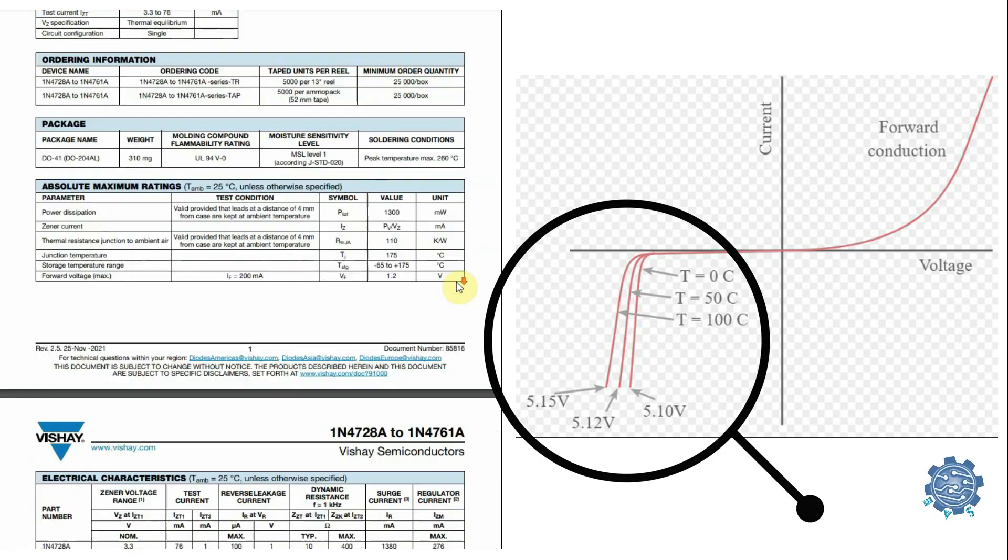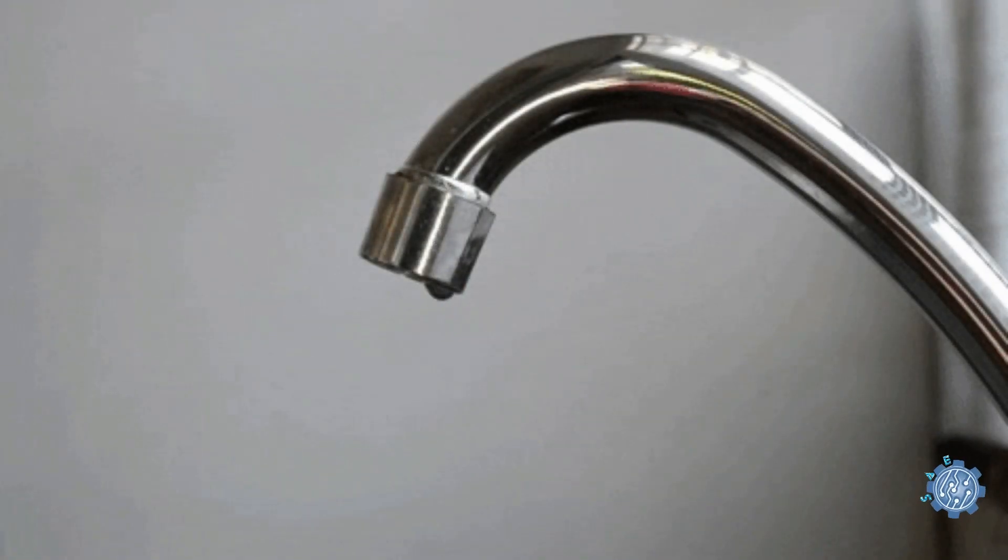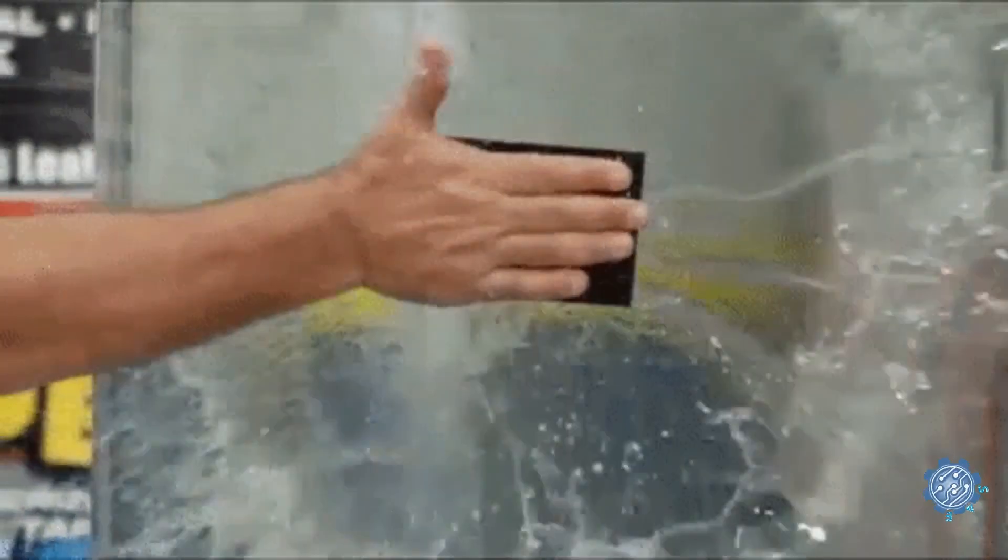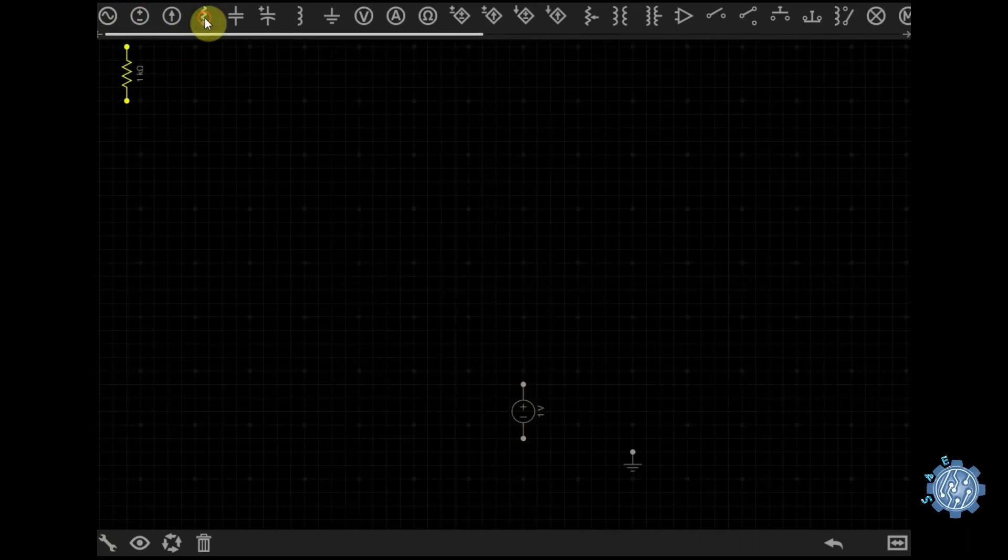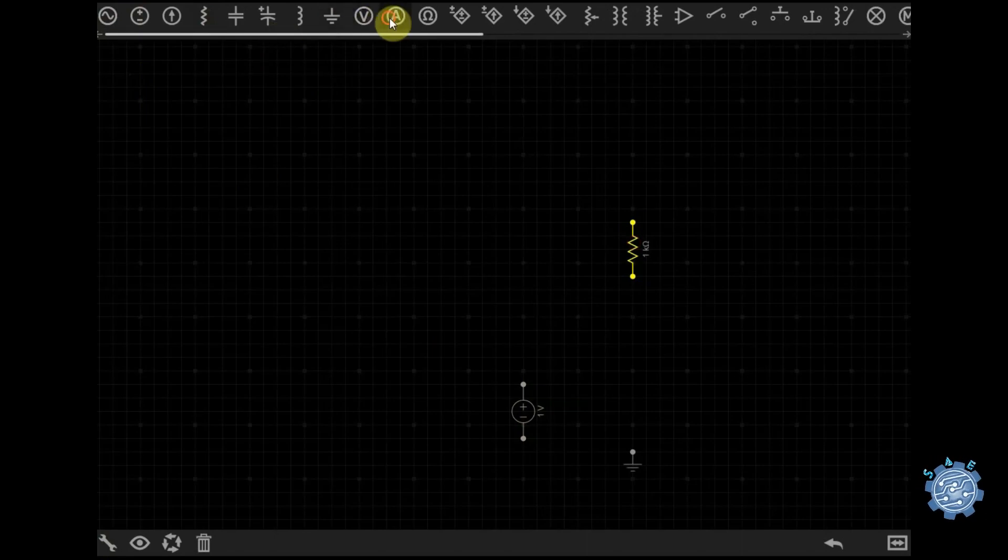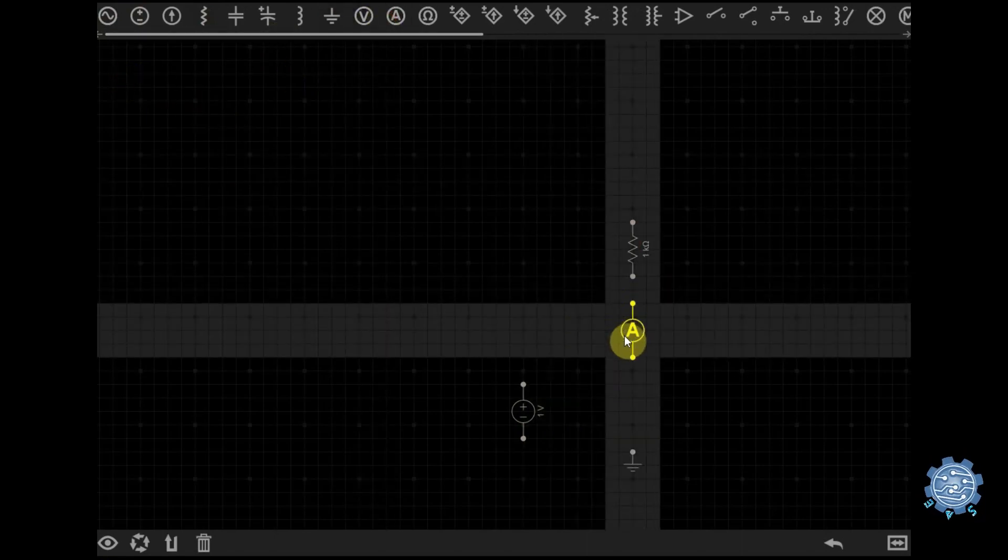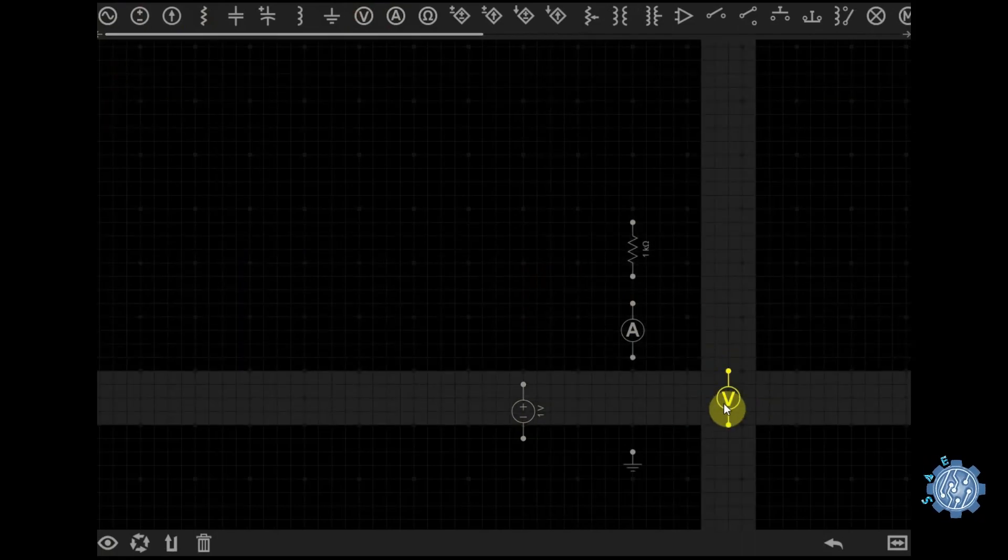One more datasheet parameter to take care about is the reverse leakage current. This is the current that flows through the Zener diode when it is in reverse bias and it is not conducting due to the Zener effect. This leakage current can be important to consider in certain applications for several reasons.